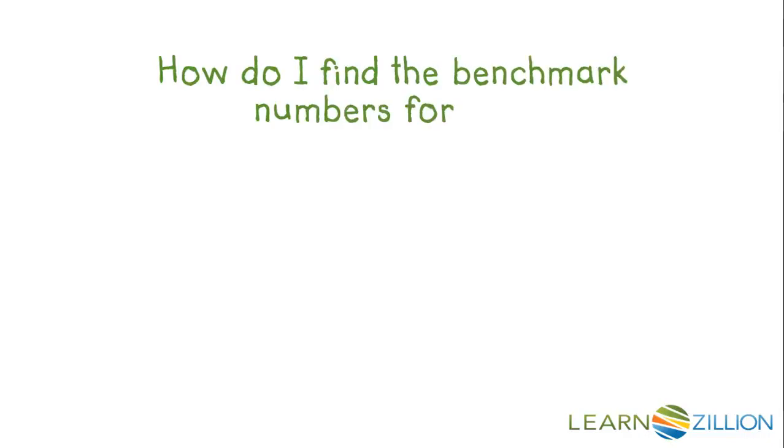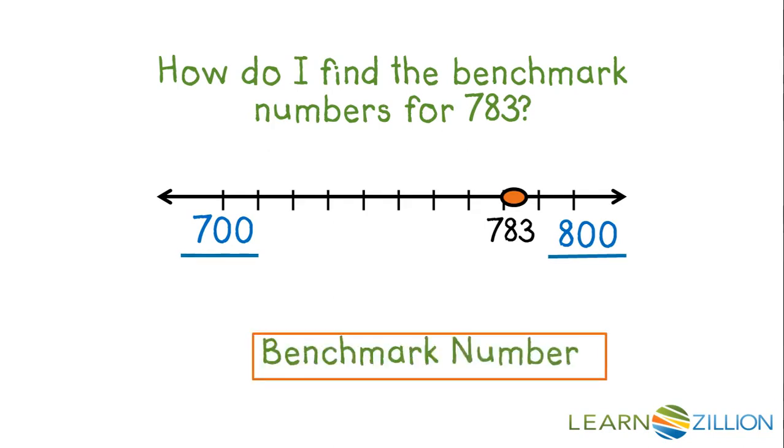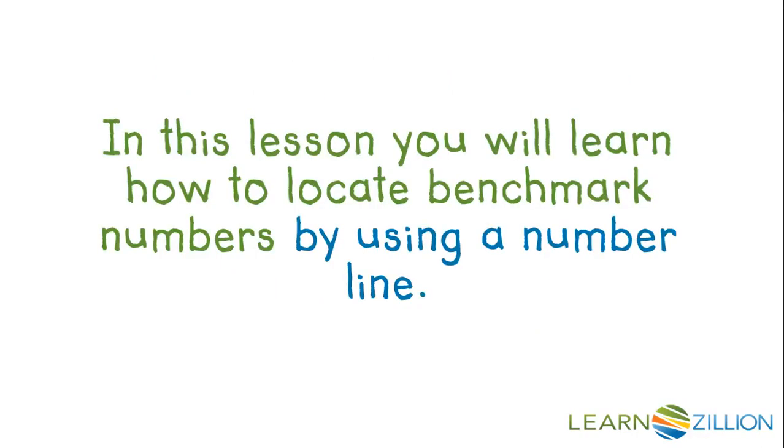How do I find the benchmark numbers for 783? 783 is between 700 and 800. 700 and 800 are the benchmark numbers. In this lesson, you will learn how to locate benchmark numbers by using a number line.